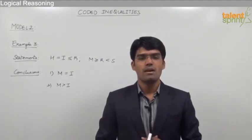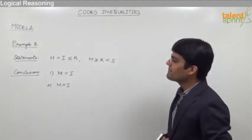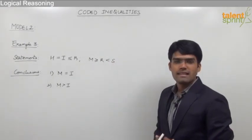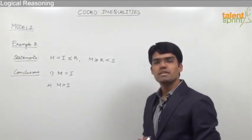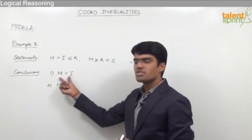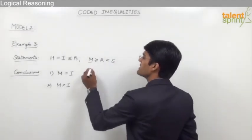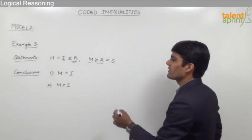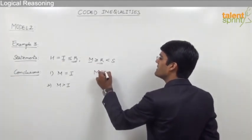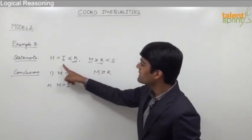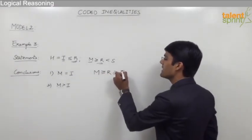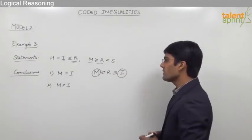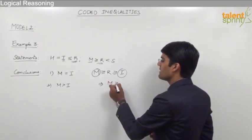Let us take the third and last example from model 2. The statements are: h = i, i ≤ r, m ≥ r, and r < s. The first conclusion is m = i and the second is m > i. Variable m is in statement 2 and i is in statement 1, so the connecting variable is r. Combining: m ≥ r and r ≥ i, giving us m ≥ i.